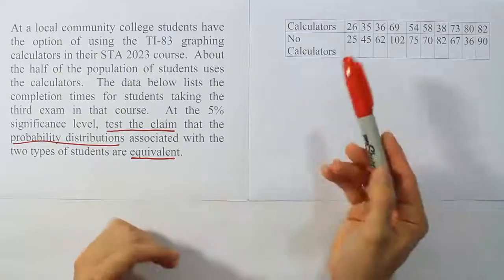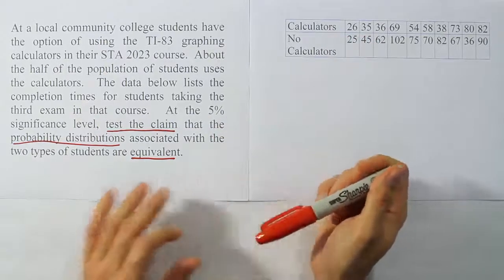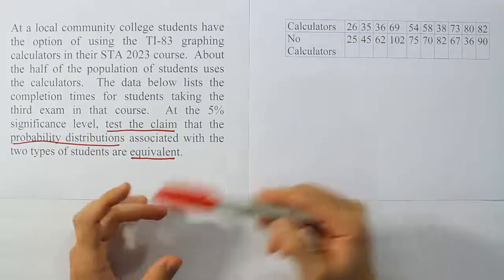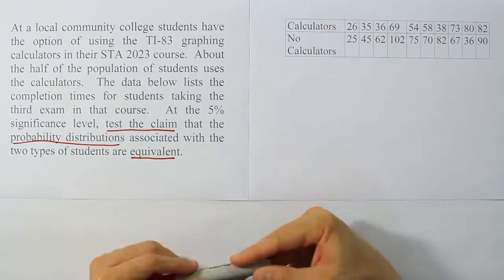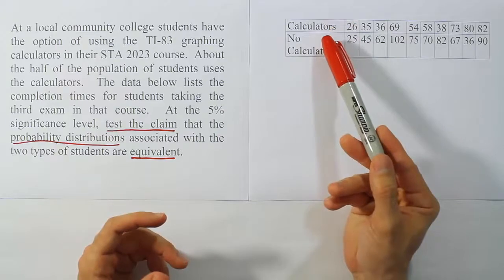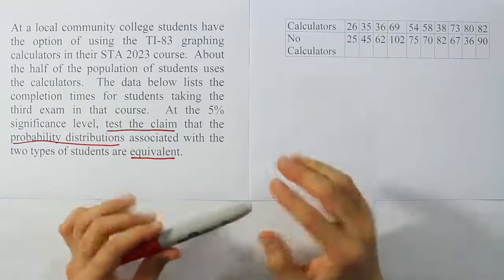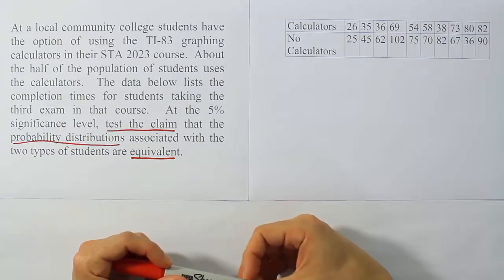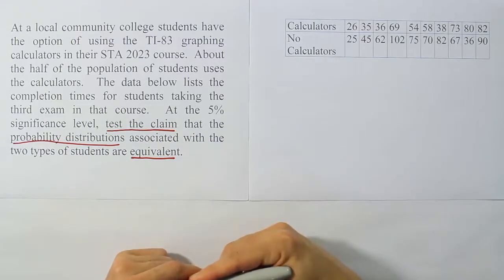So I want to look at the data and see if there's any hint in the problem what kind of data we're dealing with and what kind of test we should run. It looks like there's a calculator group and a no calculator group. There's no way those two groups could be connected or overlapping because the students either used the calculator or they didn't. So they're independent groups, separate and distinct independent samples. And so if it's independent samples and we want to run a good nonparametric procedure, the procedure you should use is the Wilcoxon rank sum test.